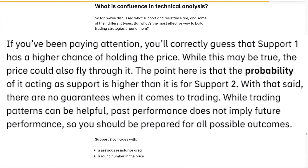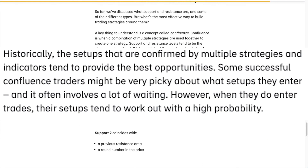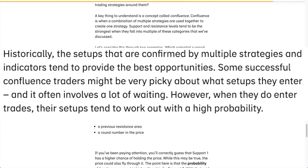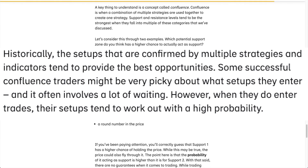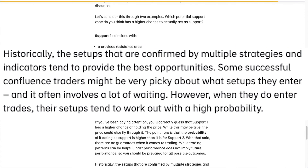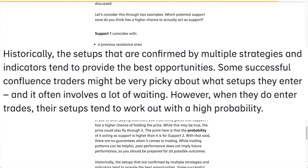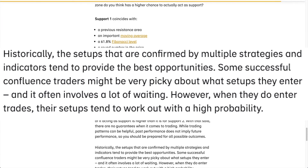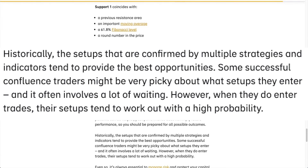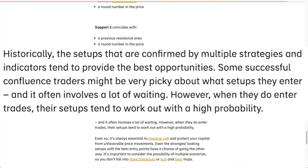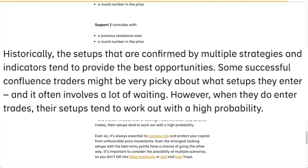Historically, setups confirmed by multiple strategies and indicators tend to provide the best opportunities. Some successful confluence traders might be very picky about what setups they enter, and it often involves a lot of waiting. However, when they do enter trades, their setups tend to work out with a higher probability than those that don't.